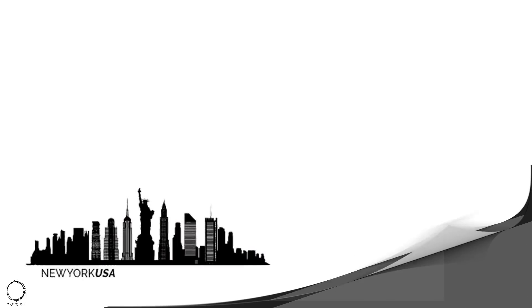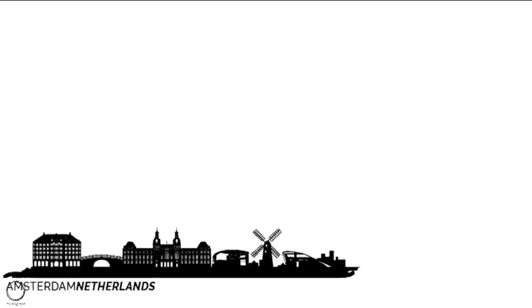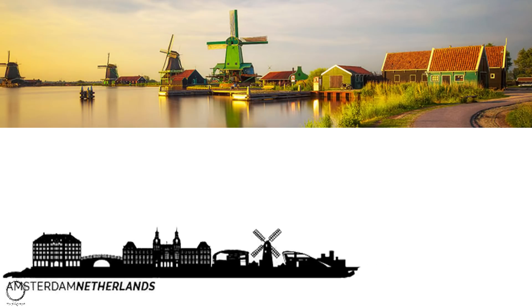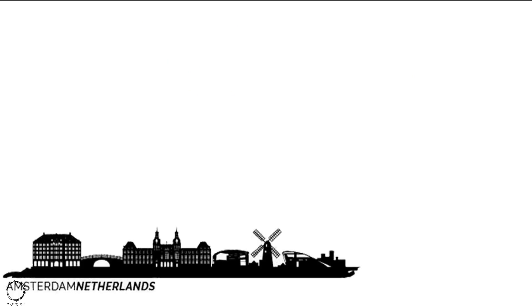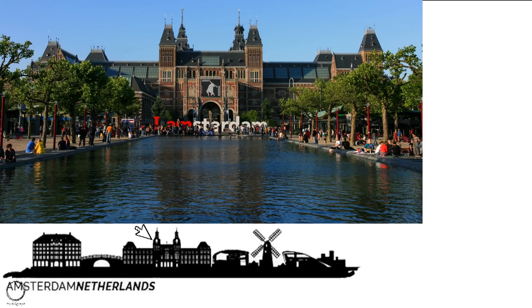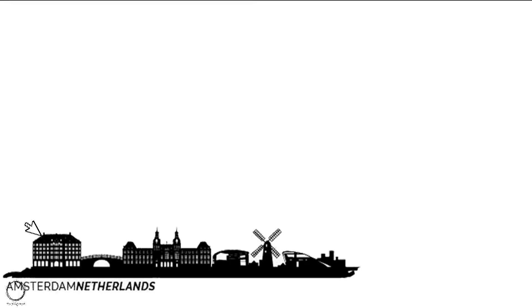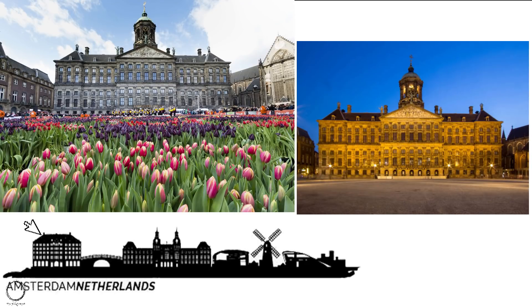Moving on to the capital of Netherlands, Amsterdam, known for its artistic heritage, elaborate canal system, and narrow houses with gable facades — legacies of the city's 17th century golden age, also highlighted in the skyline. Another important structure is the Rijksmuseum, the Dutch National Museum dedicated to arts and history. The last structure is the Royal Palace Amsterdam, another prominent building in the skyline.